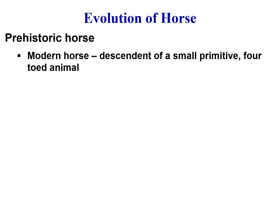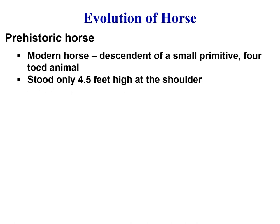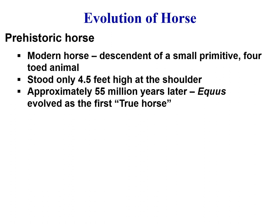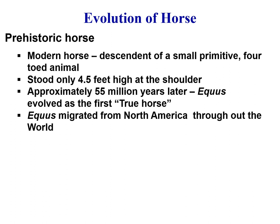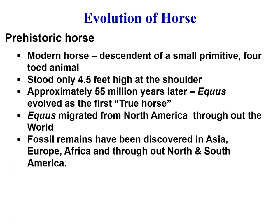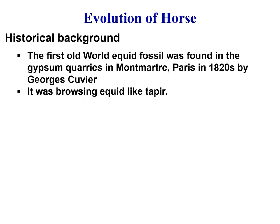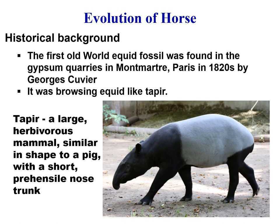The prehistoric horse — the ancestor of the modern horse — was a small, primitive, four-toed animal that stood only about 4.5 feet high at the shoulder. Approximately 55 million years later, the modern horse, Equus, evolved as the first true horse on the planet. Equus migrated from North America throughout the world, and fossil remains have been discovered in Asia, Europe, Africa, and throughout North and South America. The first Equus fossils were found in gypsum quarries in Montmartre, Paris, in the 1820s by Georges Cuvier. This fossil shows that this animal was a browsing, tapir-like animal — a large herbivore mammal similar in shape to a pig with a short prehensile nose and trunk.